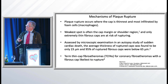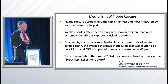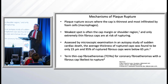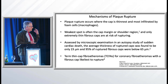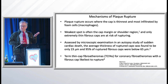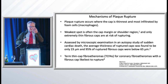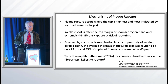The rupture occurs where the cap is thinnest and most infiltrated by macrophages — white blood cells. Our body doesn't like inflammation. The more inflammation you have in your body, the more likely you are to have plaque rupture. An article just came out showing that people with periodontal disease — inflammation of their gums — have bone marrow that senses this and puts out more white blood cells. These white cells end up working on the plaque in the coronary arteries rather than the periodontal disease, making rupture more likely.